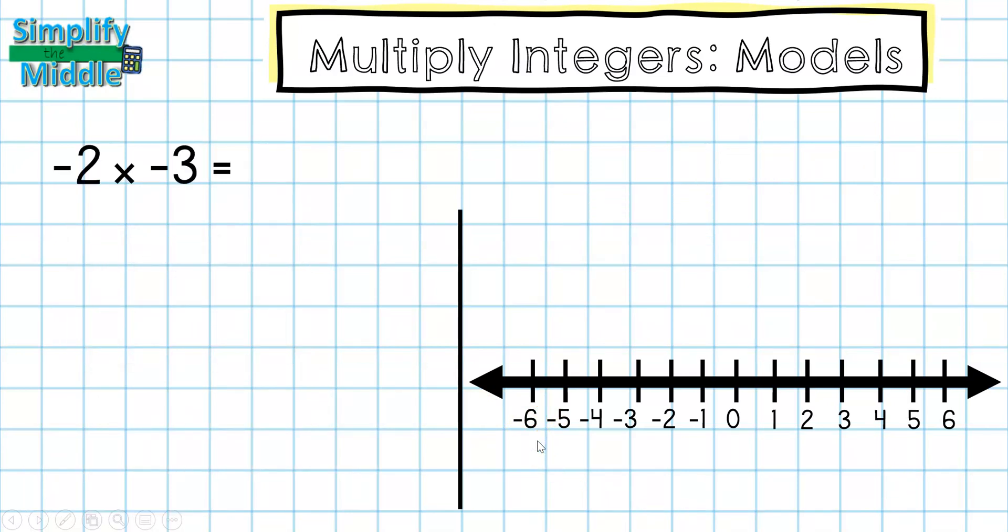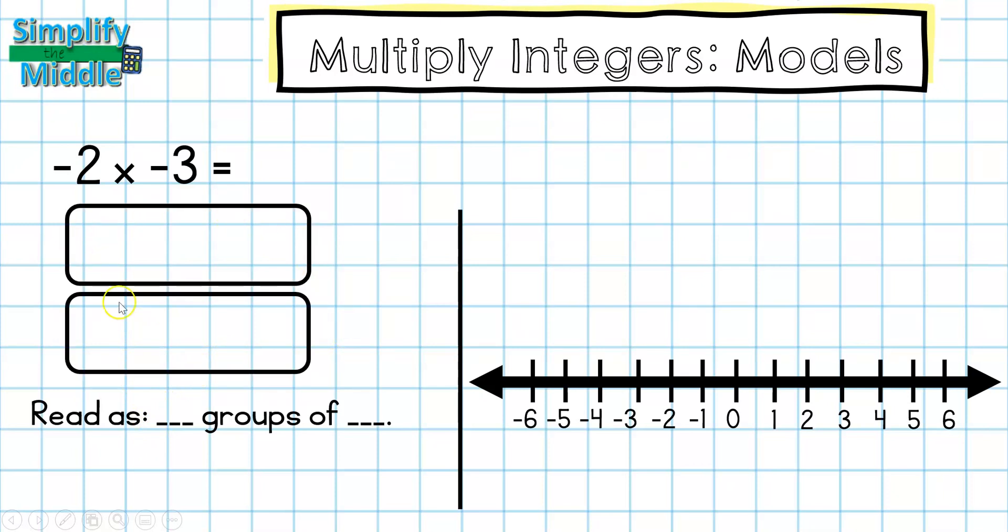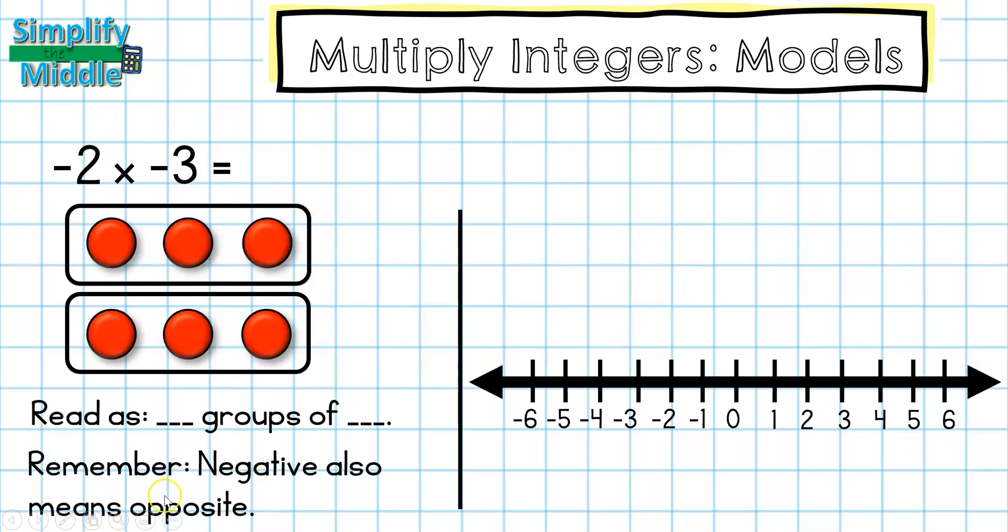And then our last example looks very similar. So we talked about what happens when we have the opposite of a group. We talked about a group having negatives, so now we're going to put those together. So we're going to read this as the opposites of two groups of negative 3. So first I'll create my two groups. I'm going to put negative 3 in them. And then I'm going to find the opposite of that. So I'm only flipping the chips over if my first number is negative. That means to find the opposite. So then I'll count up what I have, and my answer is positive 6.